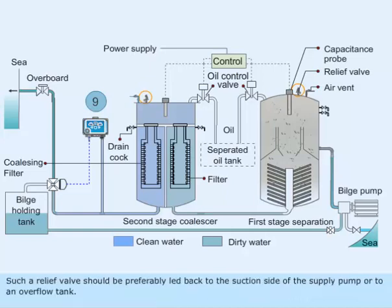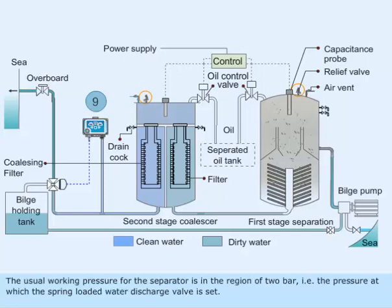Such a relief valve should preferably be led back to the suction side of the supply pump or to an overflow tank. The usual working pressure for the separator is in the region of 2 bar, which is the pressure at which the spring-loaded water discharge valve is set.